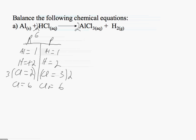Now in the process of balancing my chlorines, I unbalanced my aluminum. So now I have 2 aluminums on the product side and I only have 1 aluminum on the reactant side.